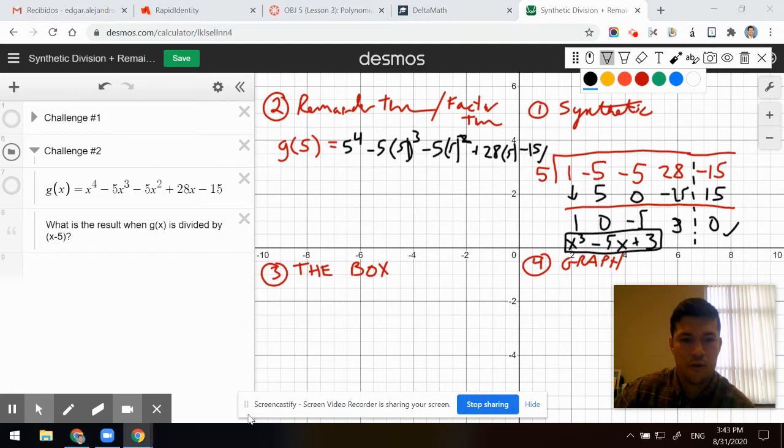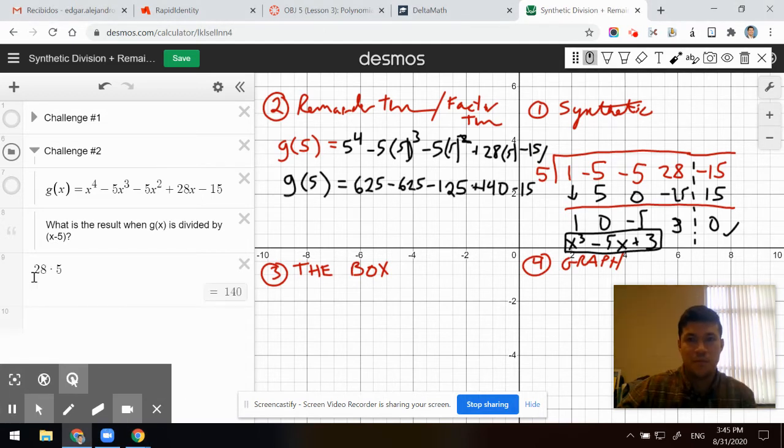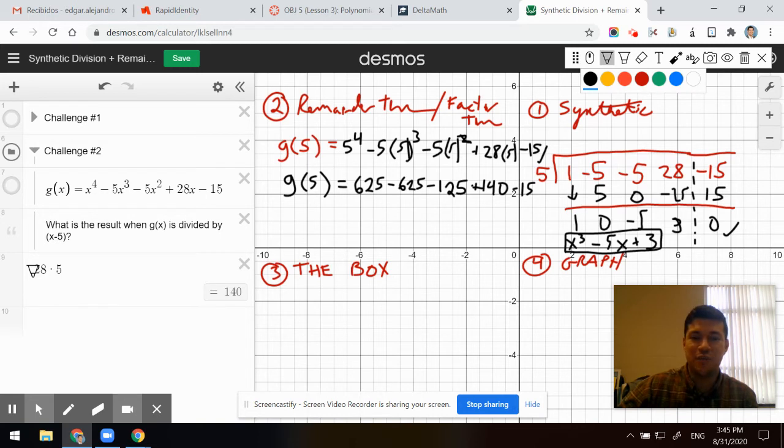So we have 5 squared plus 28 times 5 minus 15. Let's check. Magic. And 625 minus 625 is 0. 140 minus 15 is 125. 125 minus 125 is 0. G of 5 is 0.